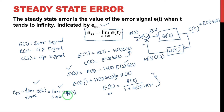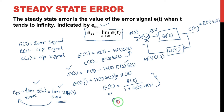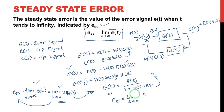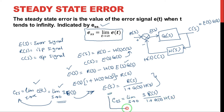So we have to find the steady-state error in the S-domain. Here E_ss is equal to limit S tends to 0 of S into E(s), where E(s) is R(s) divided by 1 plus G(s) into H(s). So I will write: E_ss equals limit S tends to 0 of S into R(s) divided by 1 plus G(s) into H(s). This is the final formula to find the steady-state error.